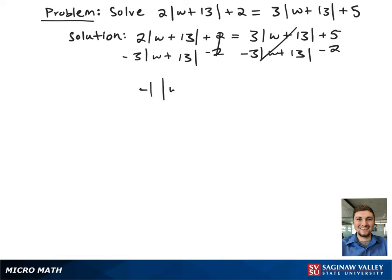This gives negative 1 times the absolute value of w plus 13 equals 3. To get the absolute value term by itself, we're going to divide both sides by negative 1.